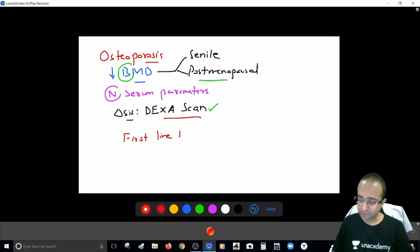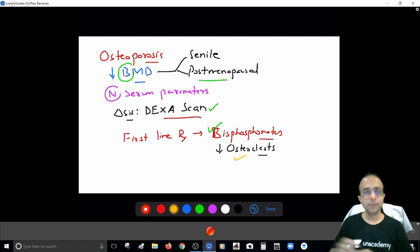the first-line treatment that we generally start is bisphosphonates. You are well-versed with pharmacology. You are very much familiar with these drugs: bisphosphonates, risedronate, alendronate, ibandronic acid. These are the drugs that inhibit the osteoclasts. So they inhibit the osteoclasts, so they stop the bone resorption. So this is what we do first up, the moment we decide that this is a patient with osteoporosis.